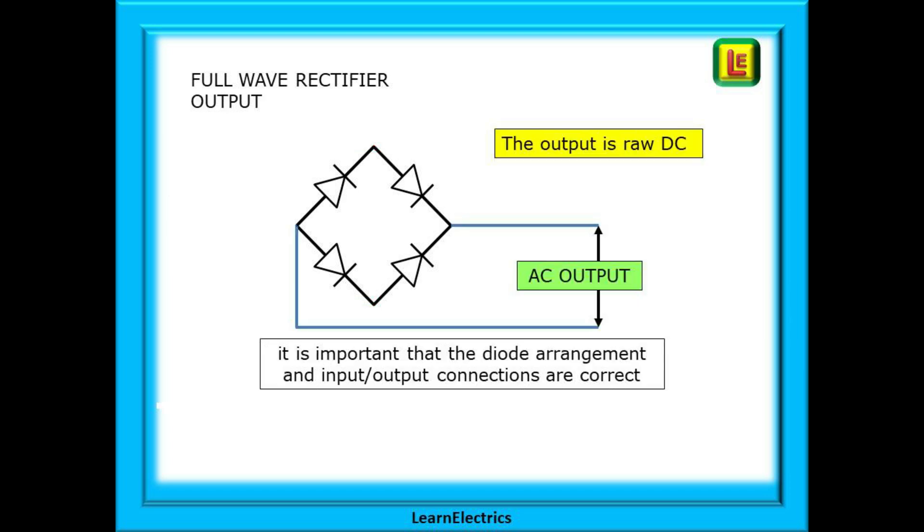The DC output is taken from the points shown here. Note that although this is direct current DC it is in a raw state. It is fluctuating between zero volts and the maximum positive voltage. We need to do more with this. It is important that the diode arrangement and the input output connections are correct.